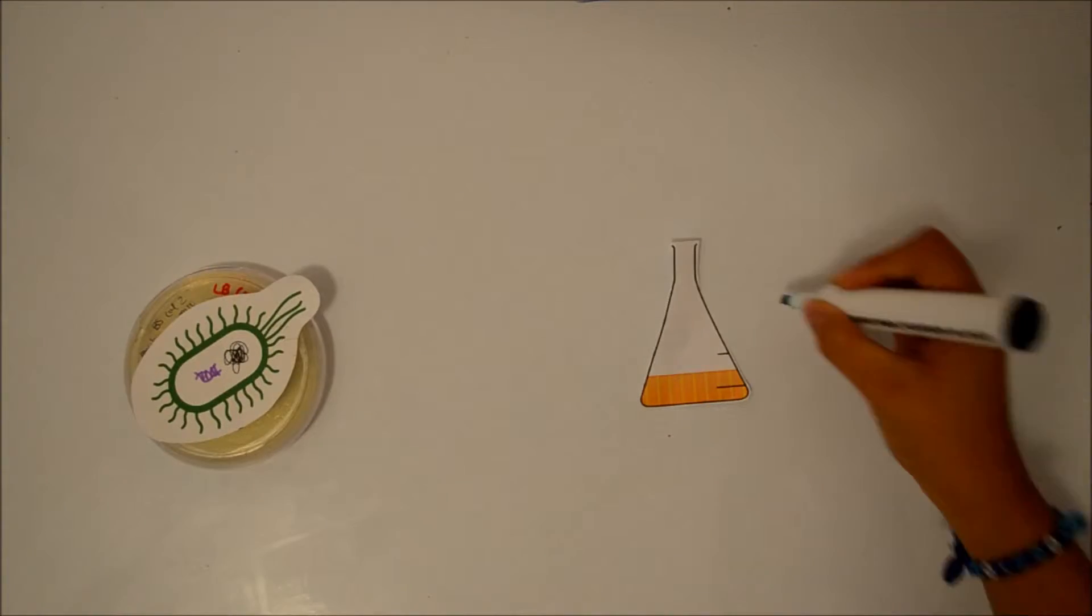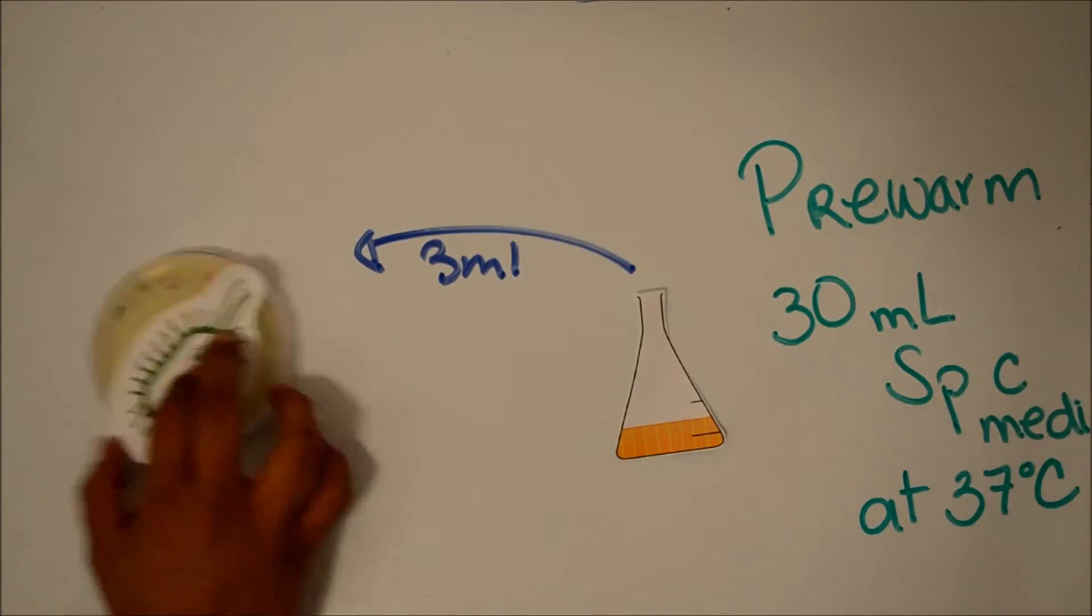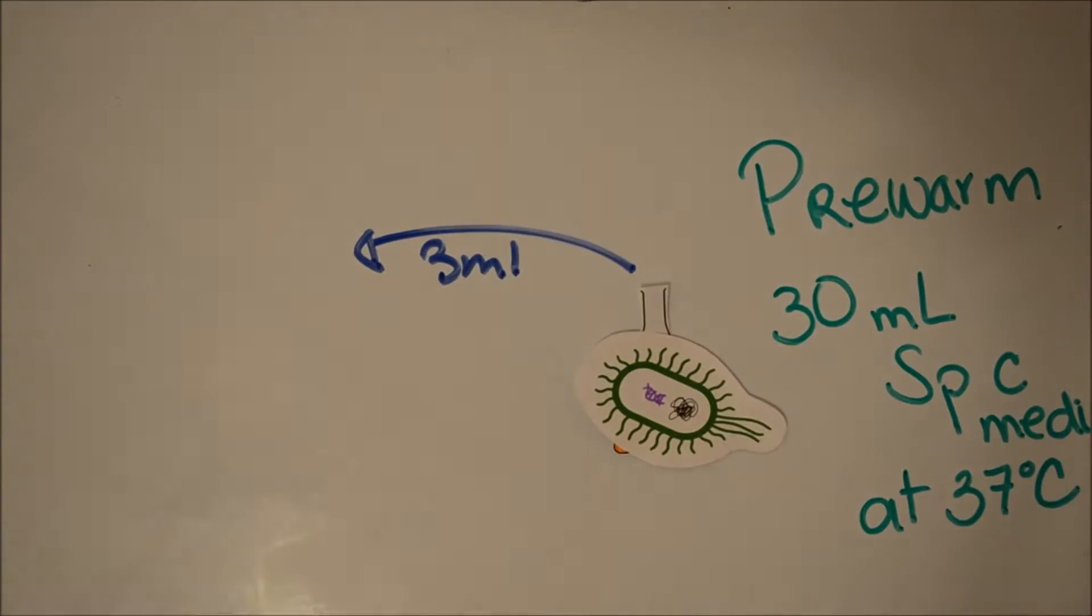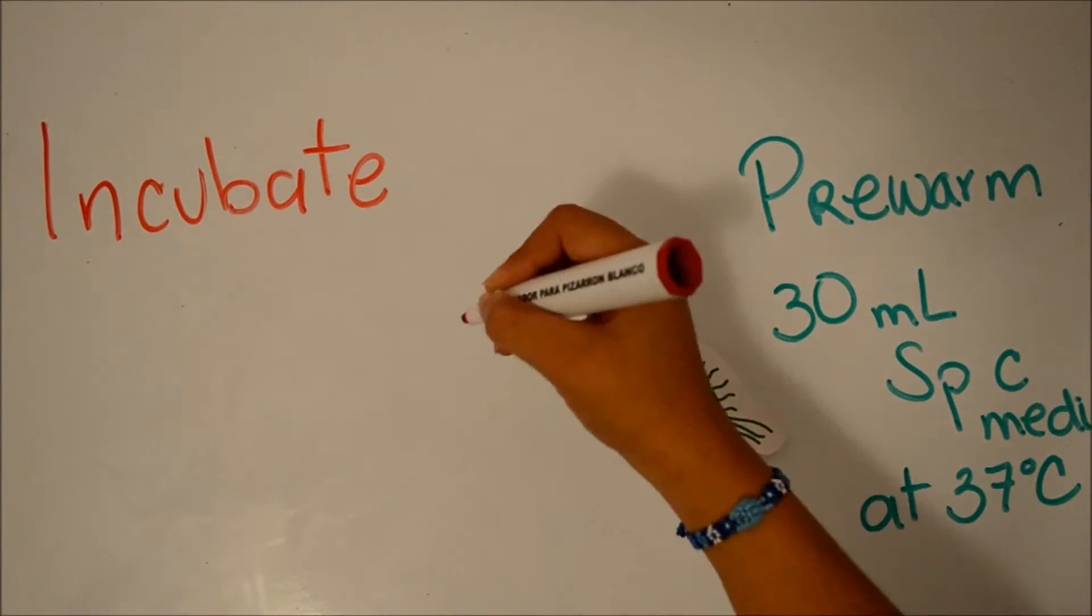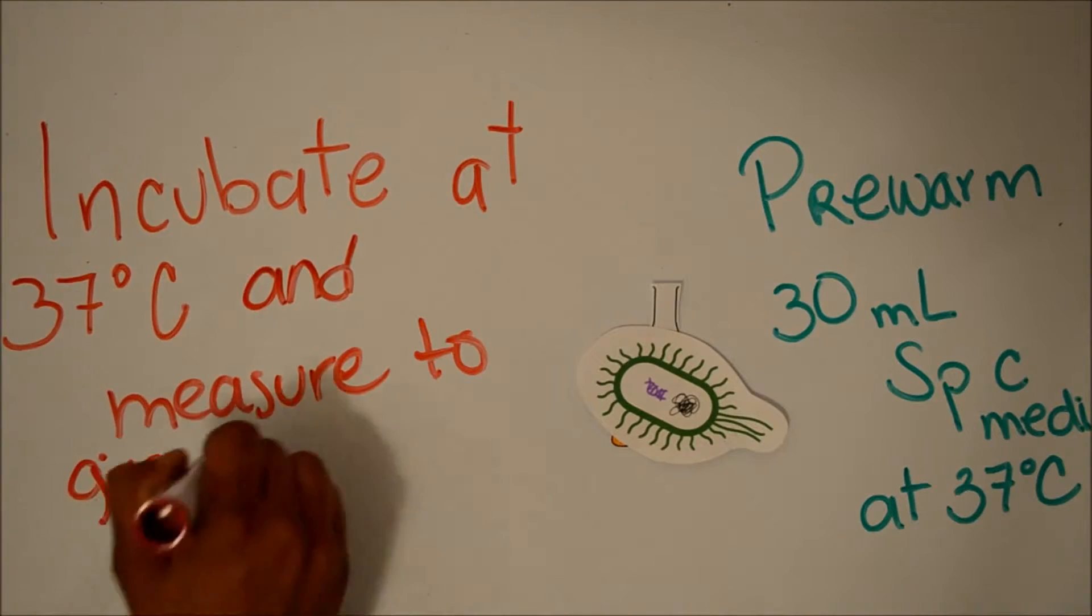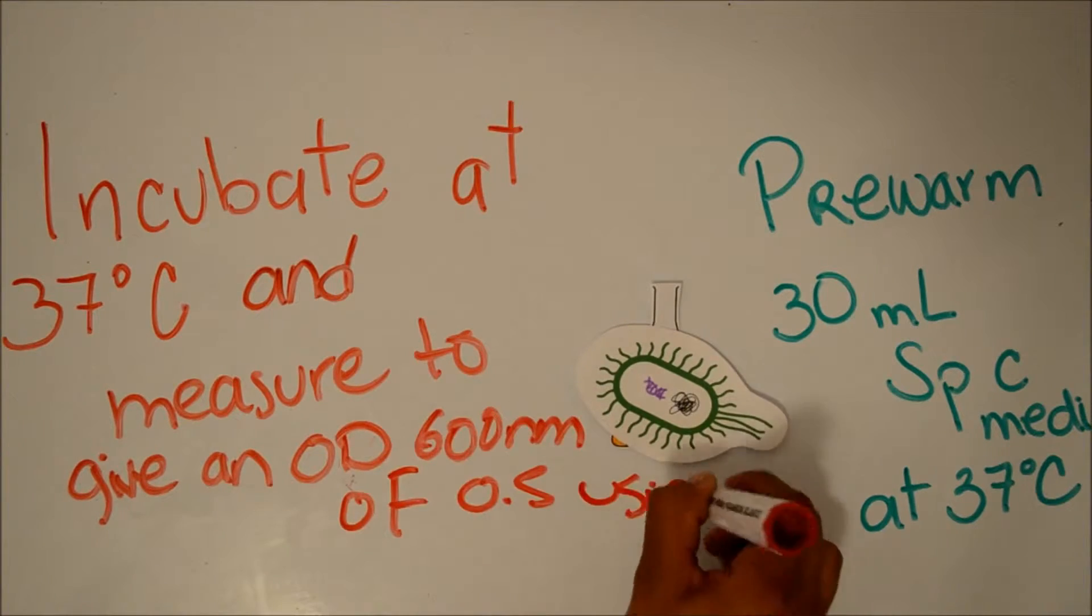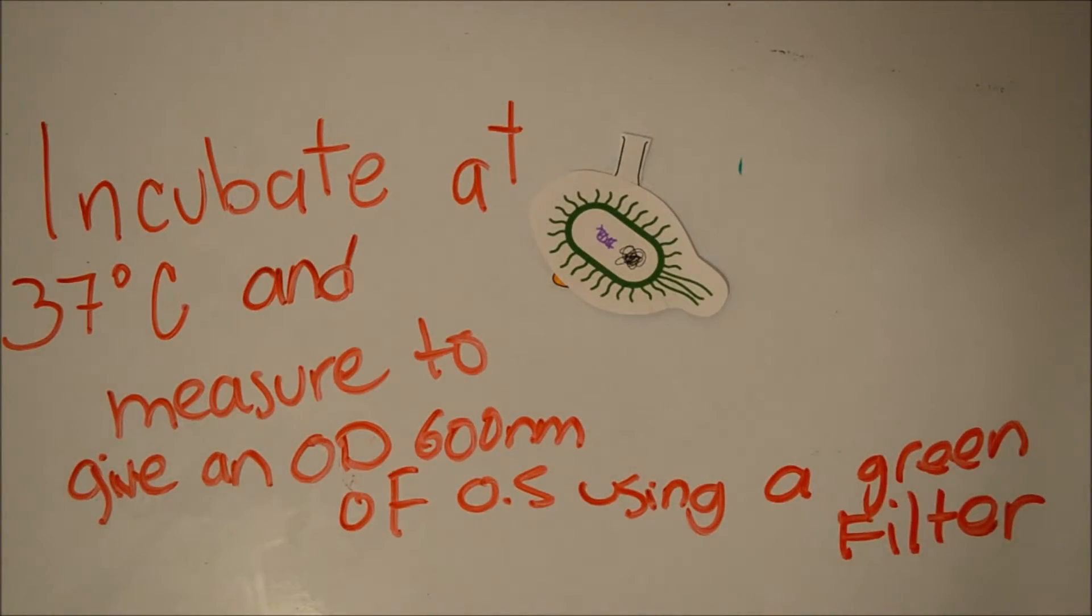The following morning, wash the cell growth on the plate with 3 ml of SPC, and add 3 drops of the solution to inoculate fresh and pre-warmed SPC medium in a flask, and measure to give an OD600 reading of about 0.5 using a green filter.